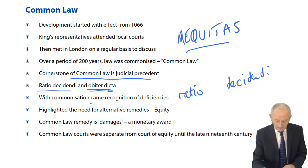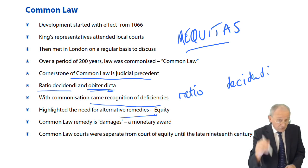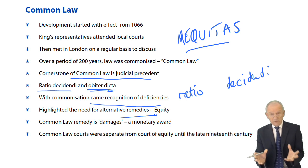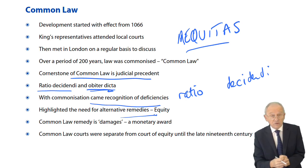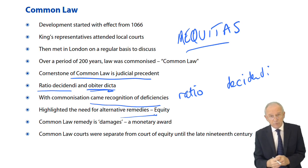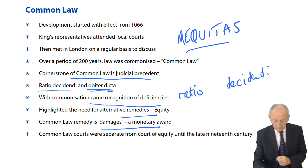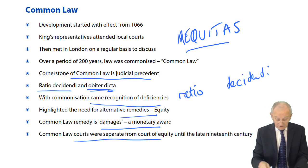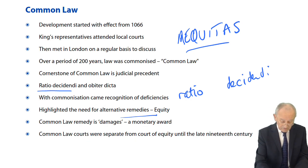With commonization came recognition of the deficiencies, highlighting the need for alternative remedies. The chancellor's court, the chancellor's judges, and the chancellor's equitable remedies developed. Common law provides damages, while the courts of equity provided equitable remedies — these were separate until late in the 19th century, when they were merged by the Judicature Acts of 1873 to 1875.